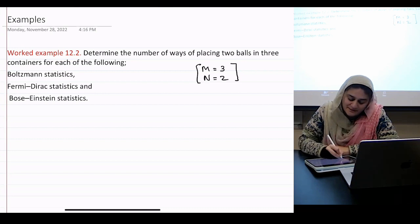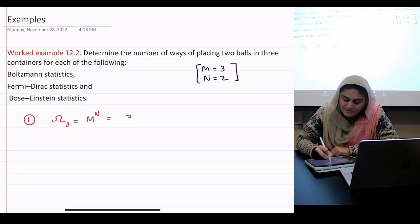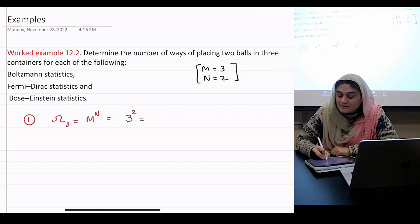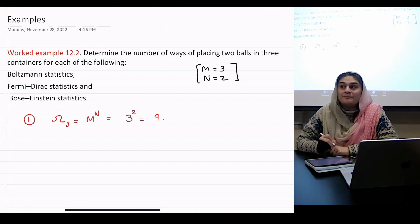Red, right? It was in red. Okay, so it was m to the power n, which means 3 to the power 2, which means... So that means nine different ways of doing this.